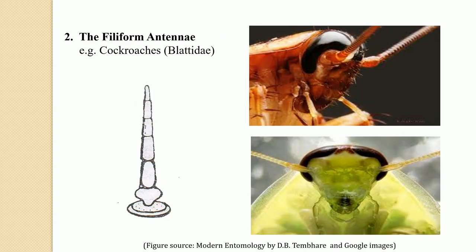The second type is filiform antennae. Here the flagellum appears like a thread-like structure, and this flagellum is made up of uniformly thin segments — there are many segments contributing to the formation of the flagellum. It also has the basal scape, second pedicel, and then the flagellum made up of many uniformly thin segments. This antennae is well evident in cockroaches, which belong to the family Blattidae.